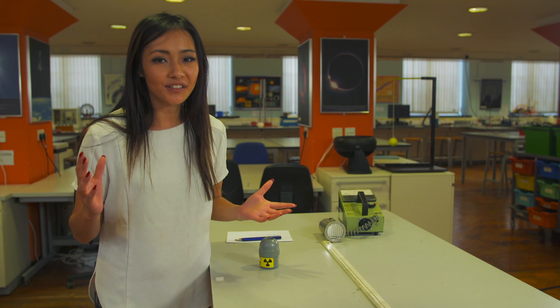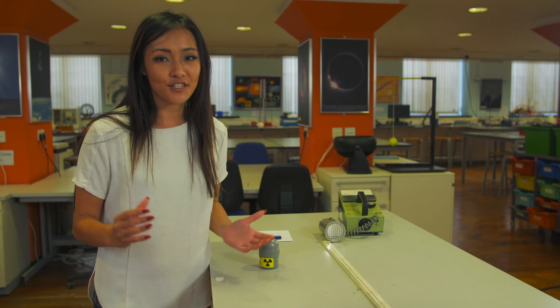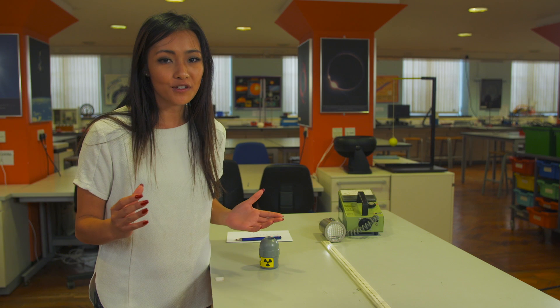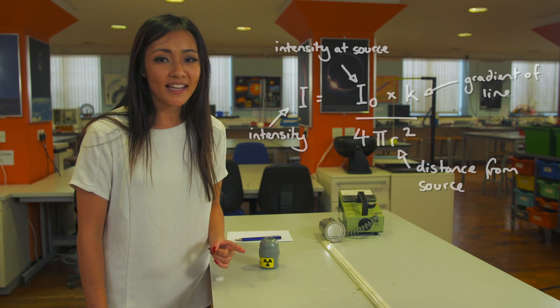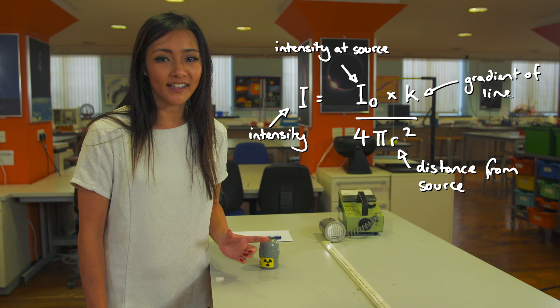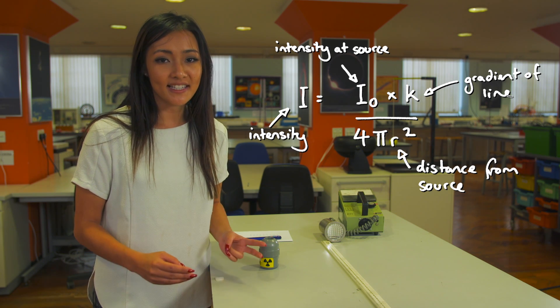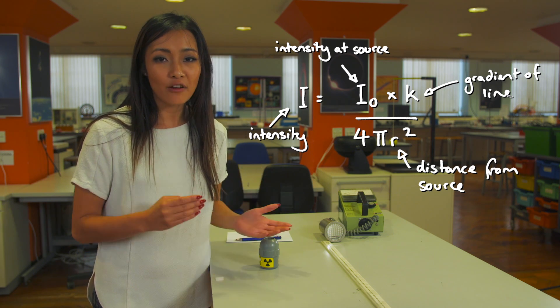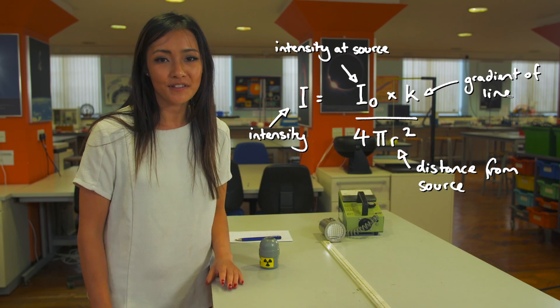The full equation, so that we can measure the intensity at any distance from the source, requires two constants. K is given by the gradient of the line, and I0, the initial intensity, is given by the inverse count rate at zero centimetres from the source. This is true for any type of radiation that radiates spherically.